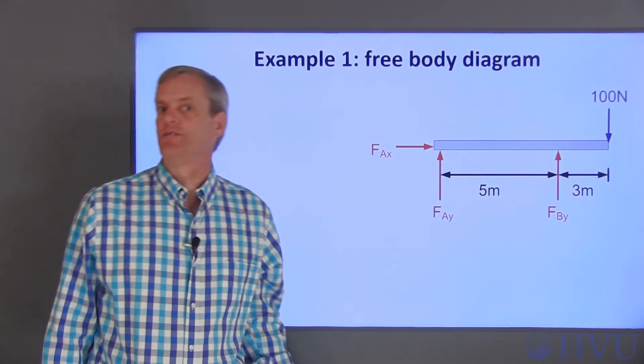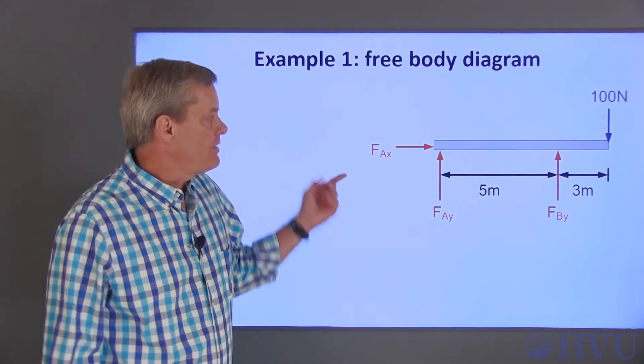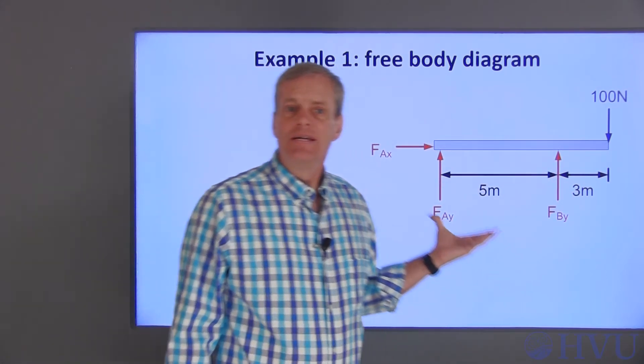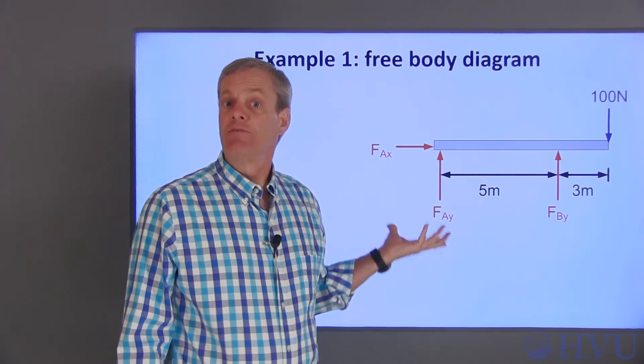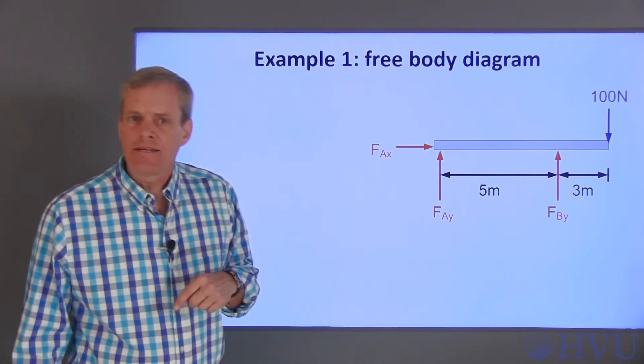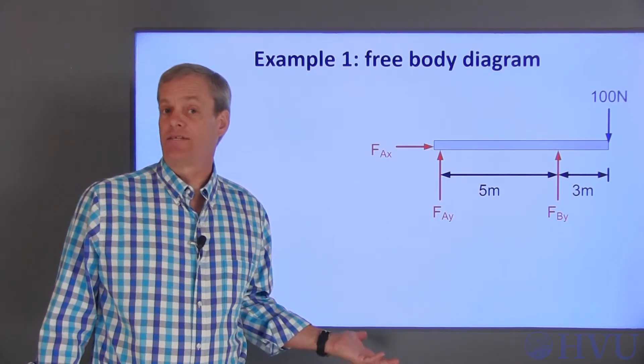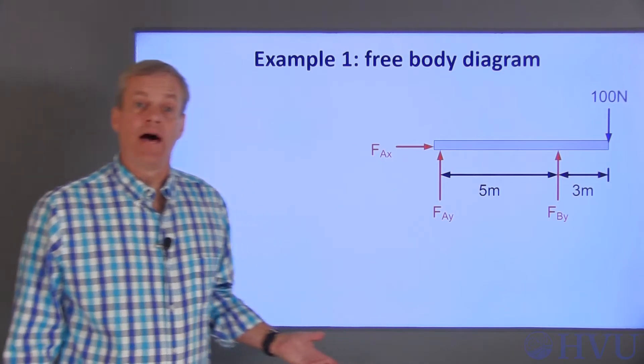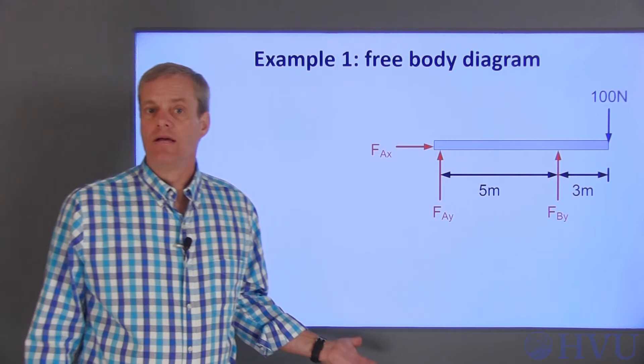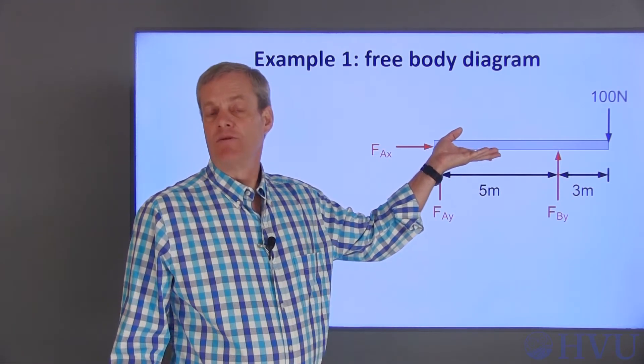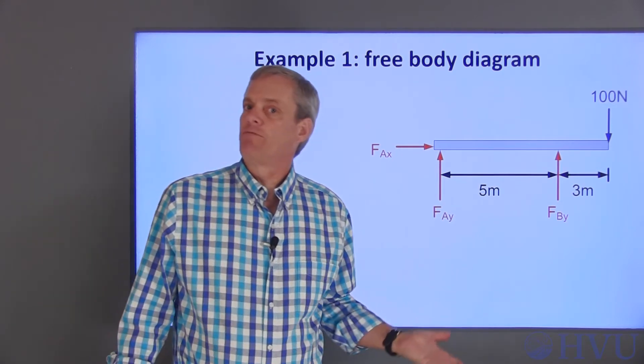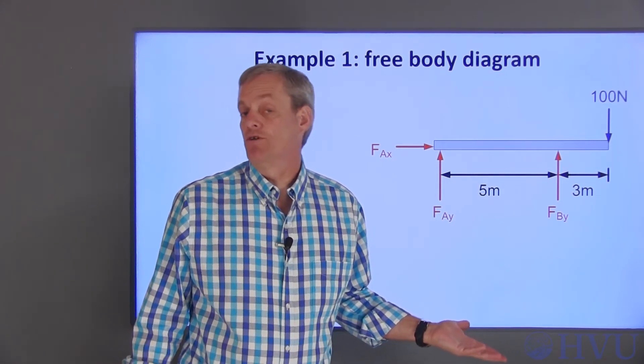Now I can write the equations governing the system. I do that with what's called a free body diagram, which shows all the forces on the beam. Since the beam won't move in any direction, the sum of the forces in any direction has to be zero. Newton's law tells us that the sum of the forces on a body is its mass times acceleration. So if the body is stationary, acceleration is zero and the sum of the forces is equal to zero. Since the body also can't rotate, the sum of the moments at any point is also zero. Moments are simply forces that cause rotation, like when you twist a jar lid to open it.